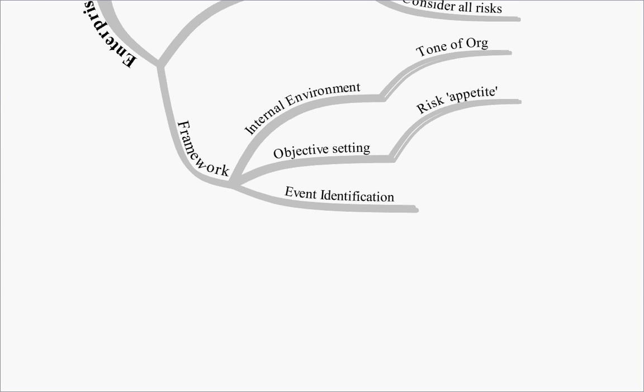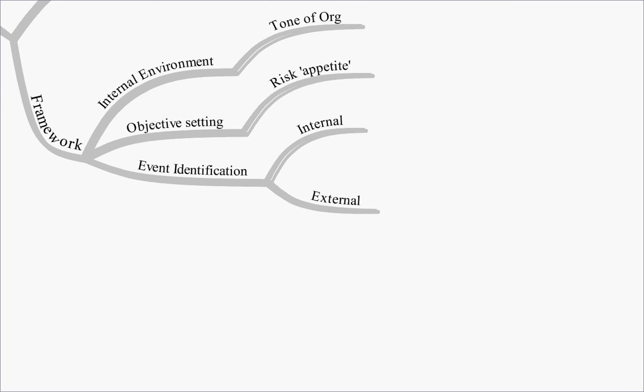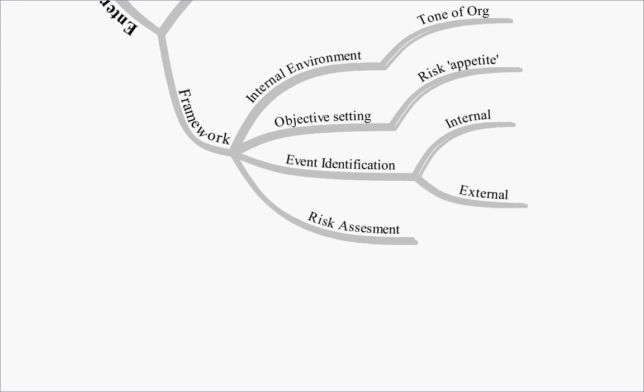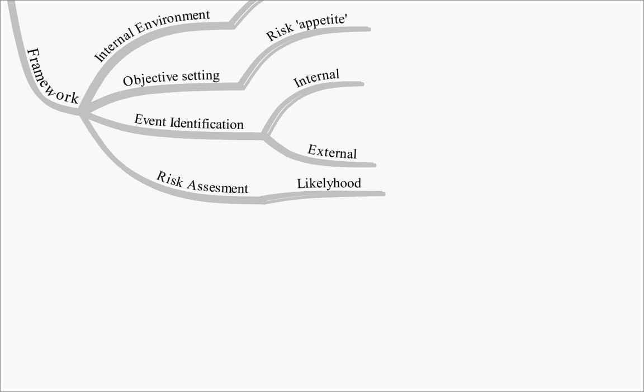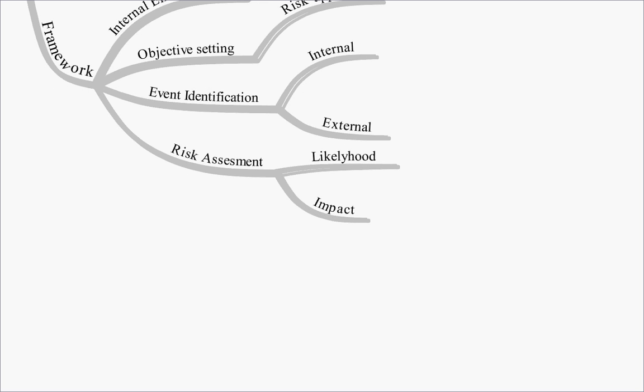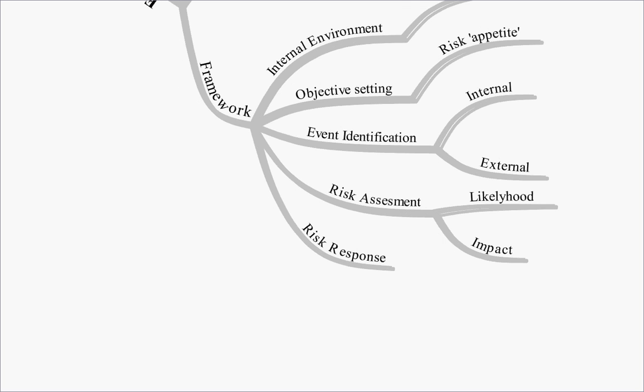Risk identification. We're going to look at internal risks and the external risks to identify what events could happen to affect the firm. We're then going to undertake a risk assessment. And that's going to look at the likelihood of the risk happening and the impact if it does happen. So we've looked at the risk assessment. How are we going to respond to that risk?